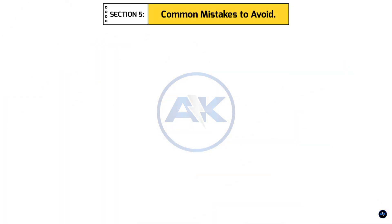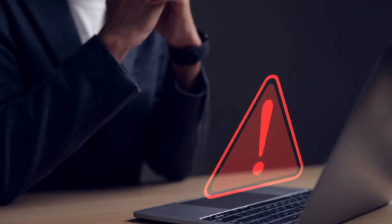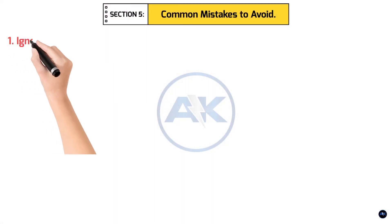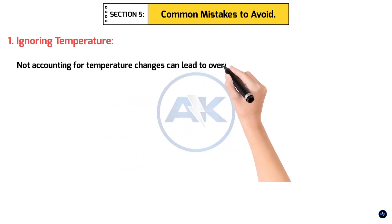Section 5. Common Mistakes to Avoid. Before we wrap up, here are a few common mistakes to avoid. 1. Ignoring temperature. Not accounting for temperature changes can lead to overvoltage and damage your inverter.